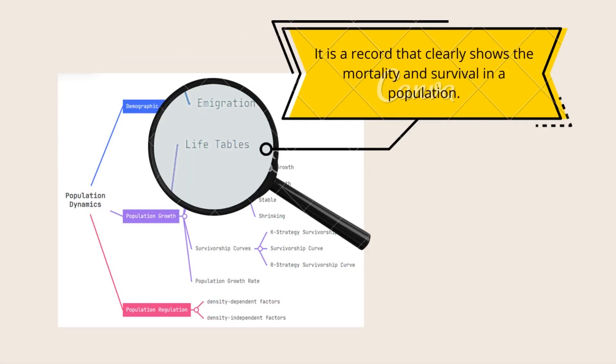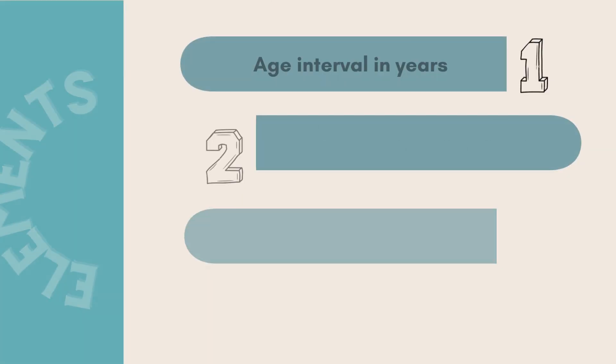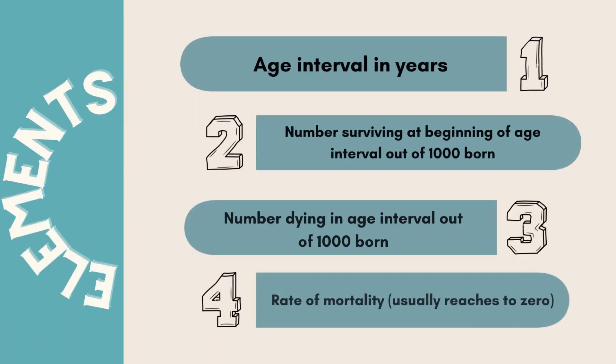For life tables, it is a record that clearly shows the mortality and survival in a population. There are four elements that one must remember: age interval in years, number surviving at beginning of age interval out of 1,000 born, number dying in age interval out of 1,000 born, and rate of mortality that usually reaches to zero.